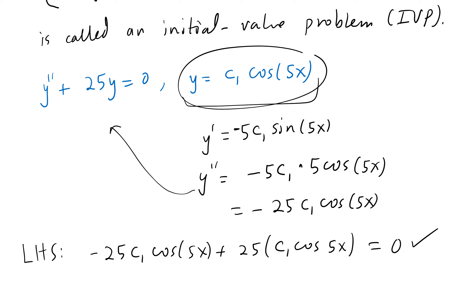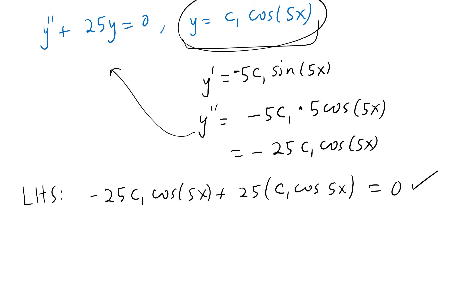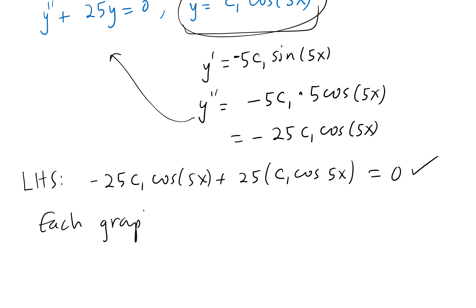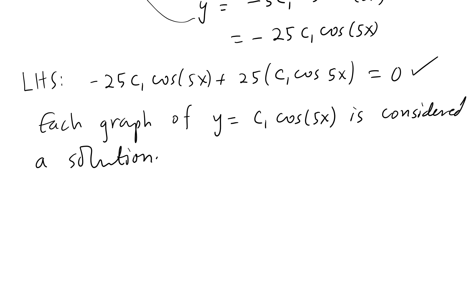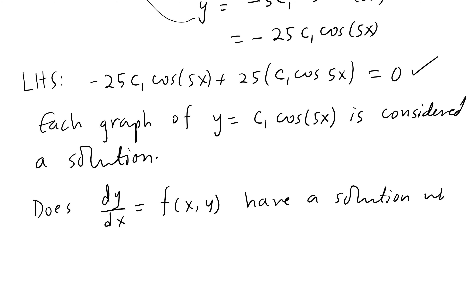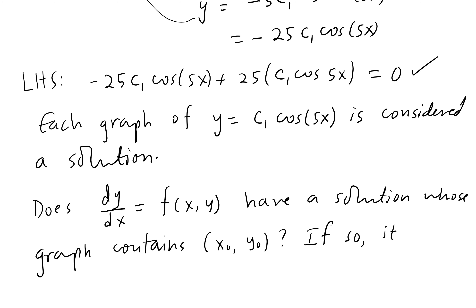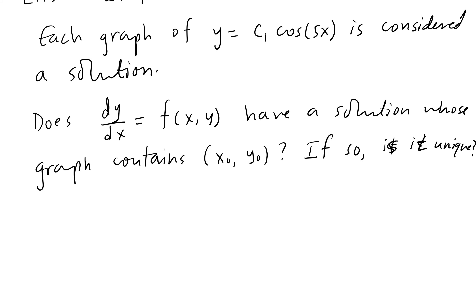The condition y(x₀) = y₀ is called the initial condition. Each graph of y = c₁cos(5x) is a solution. The key question is: does the differential equation dy/dx = f(x,y) have a solution whose graph contains the initial point (x₀, y₀)? And if so, is it unique? Let's see how we determine that.